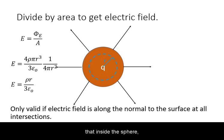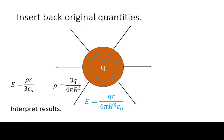Note that inside the sphere, both the total charge enclosed and the surface area are dependent on radius. We insert back the original quantities and get our final expression. Note that according to this result, the electric field inside a uniform spherical charge increases linearly with radius from the center.